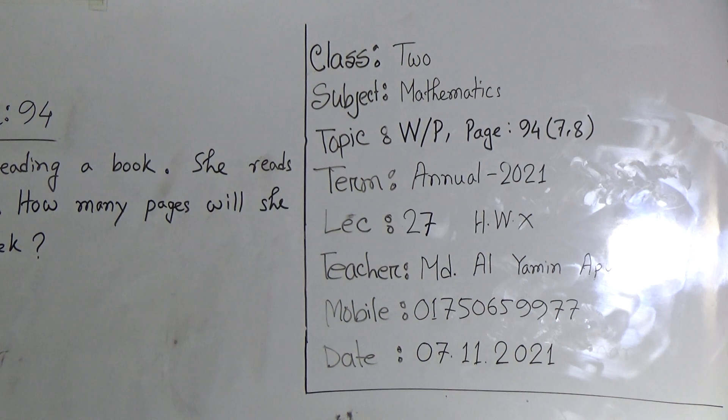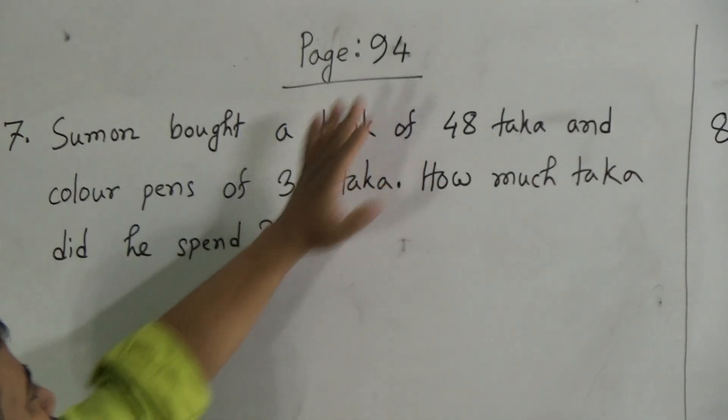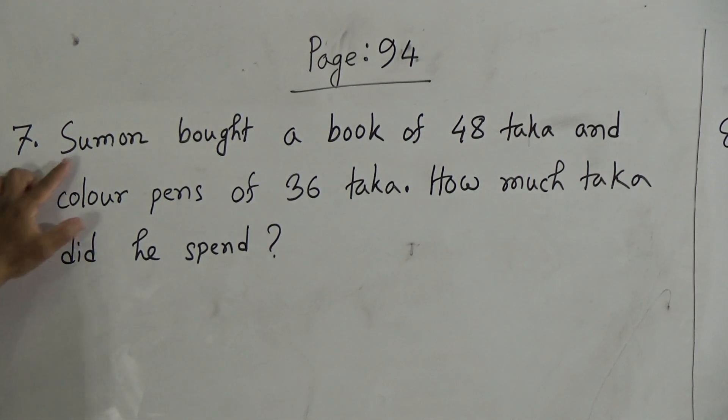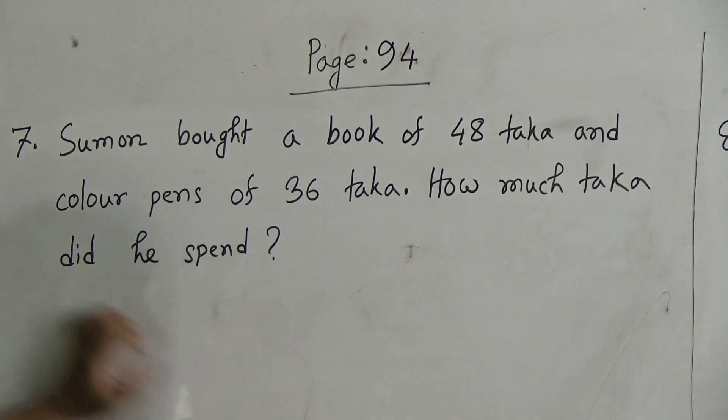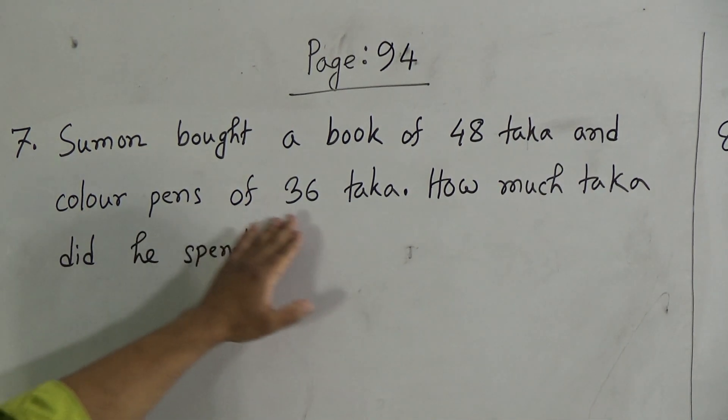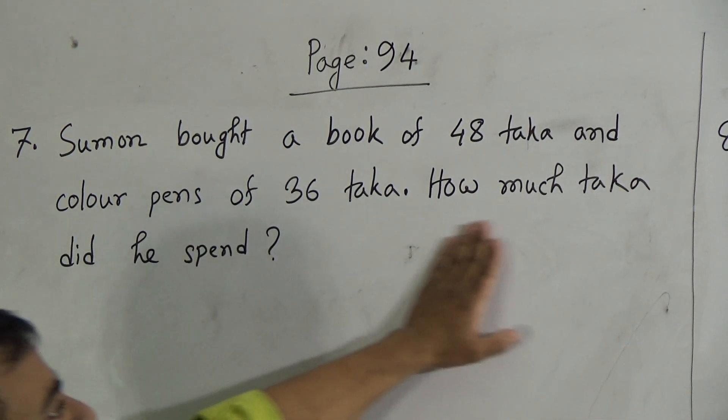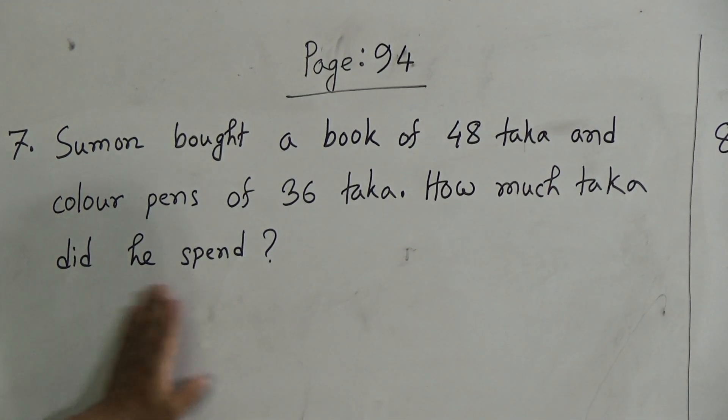Dear students, look at the board. I have already written down the questions on the board. It is page number 94, question number 7 is: Shuman bought a book of 48 taka and color pens of 36 taka. How much taka did he spend?